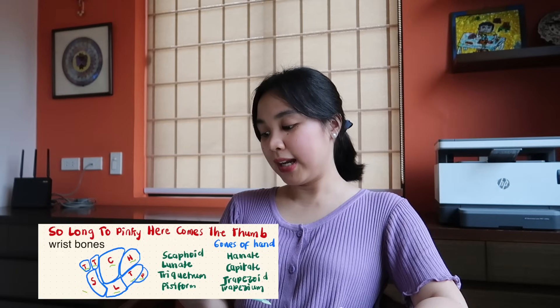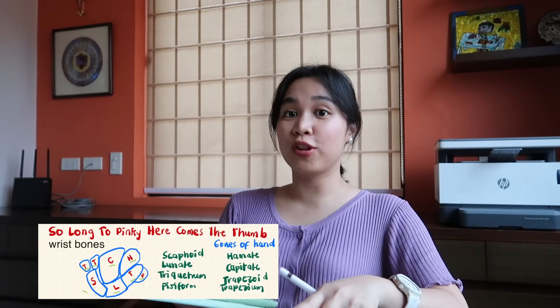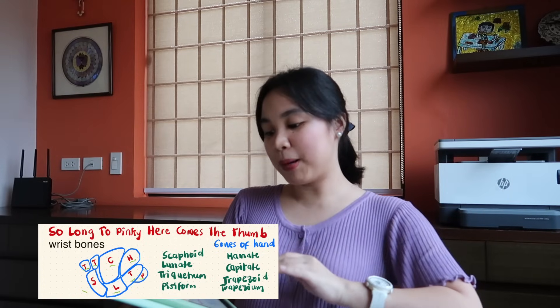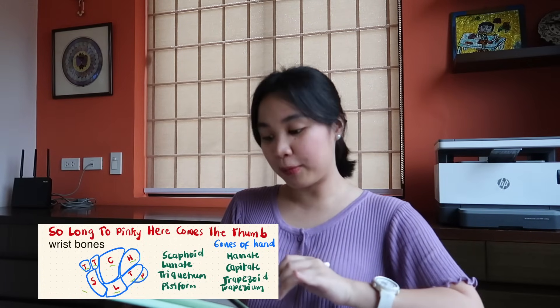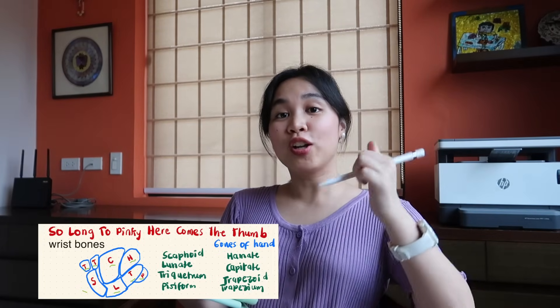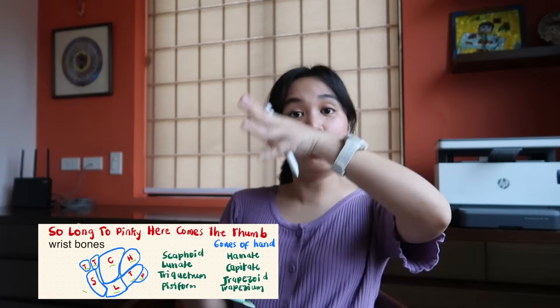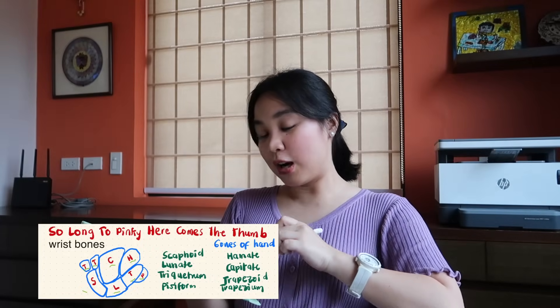Another one is 'So Long To Pinky, Here Comes The Thumb,' which is a mnemonic for the bones of your hand. It's better if you actually draw it to help you remember it. The 'So Long To Pinky' part represents the bones at the bottom, and 'Here Comes The Thumb' curves upward. The last two examples were mnemonics I learned from studying for the USMLE Step 1.